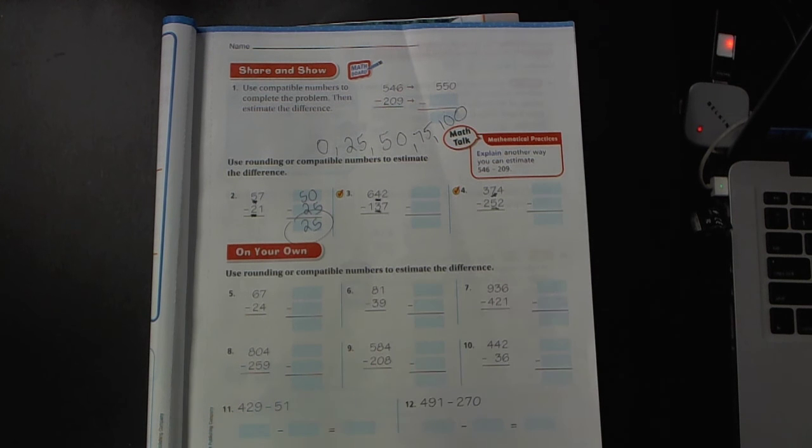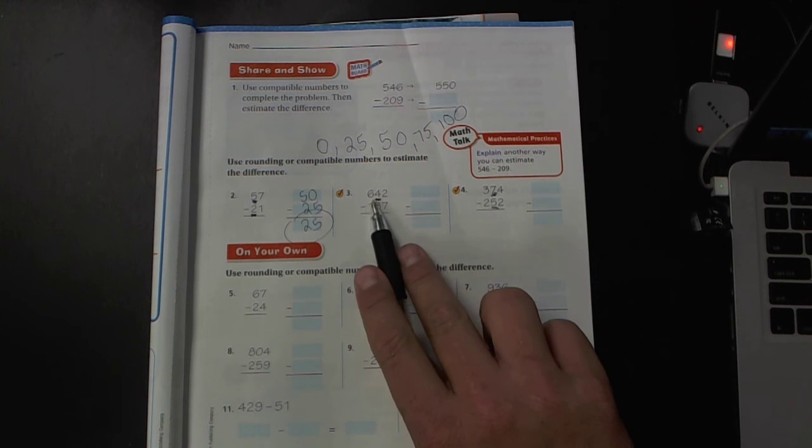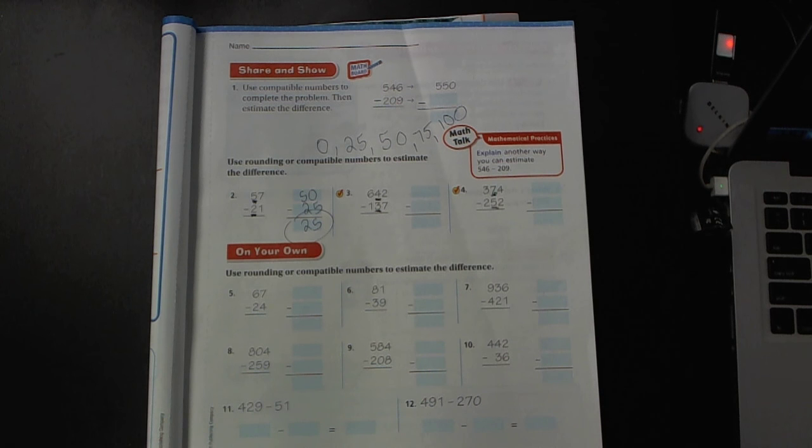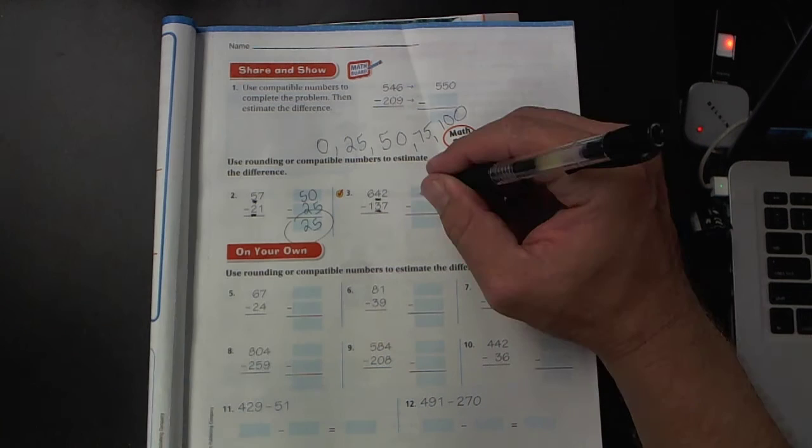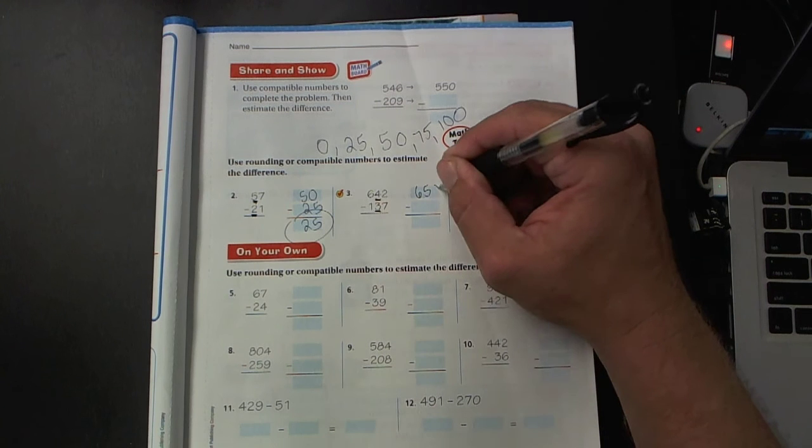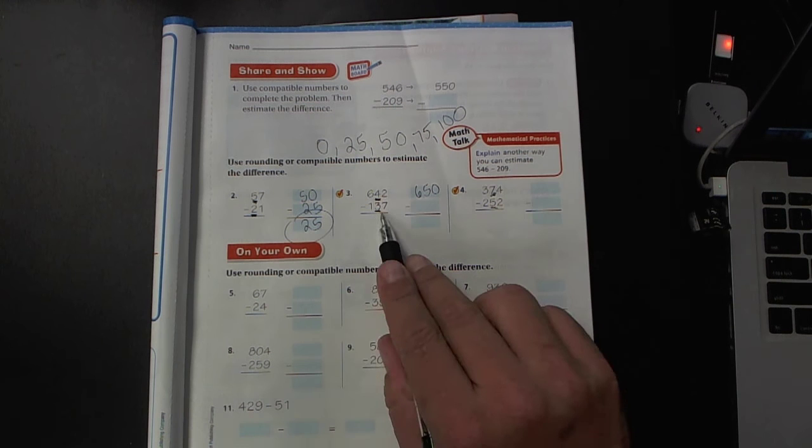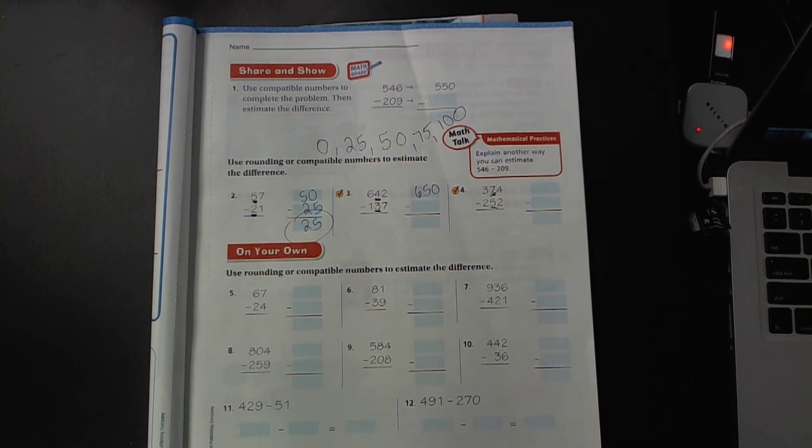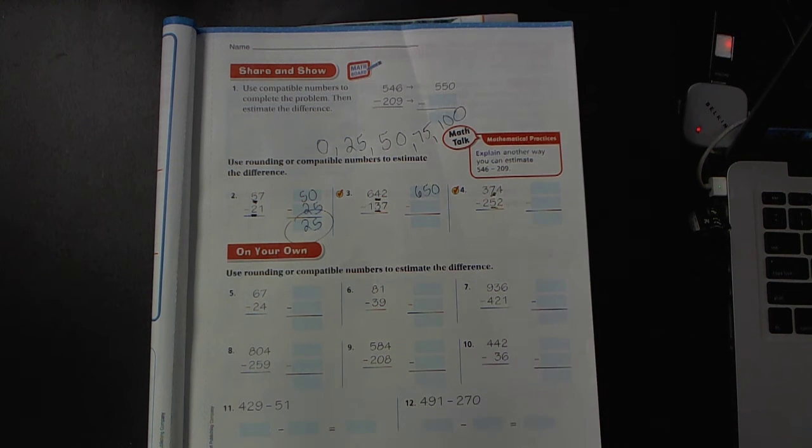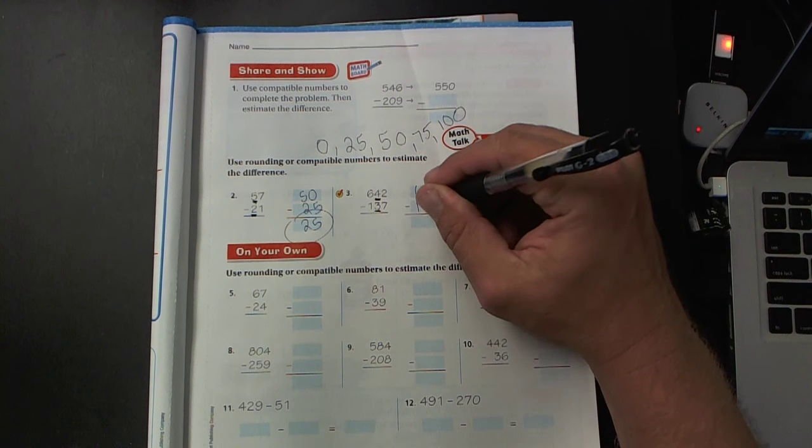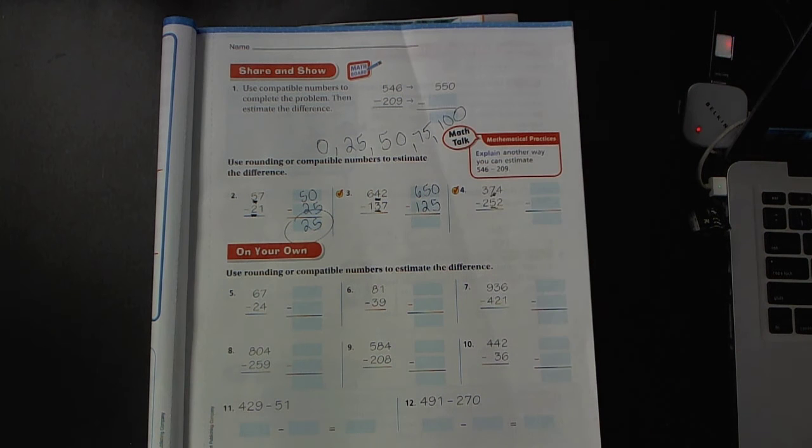Number three, 642. What is it closer to? 50. So 650, 137. 25. Let's see. It's 12 away, where if it was 50, it'd be 13 away. Very good. Would you say 25? That was a tough one.